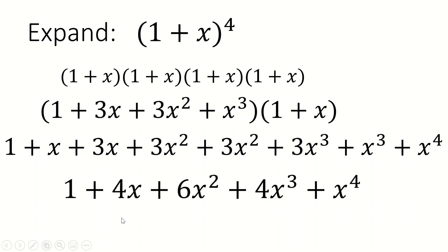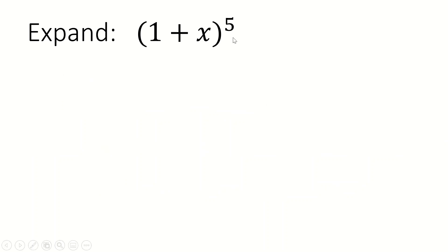What's possible to notice is that there's certainly some symmetry going on with all of these answers. For example, the previous one went 1, 3, 3, 1 in terms of the coefficients, and the x powers go from no x's, then x, then x squared, then x cubed. Here we go 1, 4, 6, 4, 1, and again no x's, then x, x squared, x cubed, x to the four. So there's certainly some symmetry here, and it's hopeful to think there might be a quicker way of doing this.